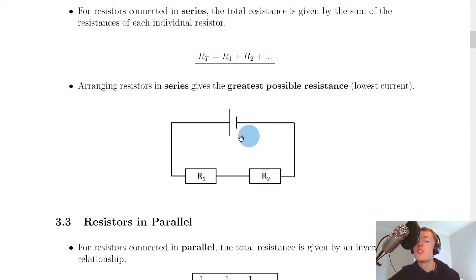This means the lowest current. So when we add more and more resistors in series, the total resistance is just going to get bigger and bigger. And because resistance is the opposition to current flow, this means that we'll get the lowest current.